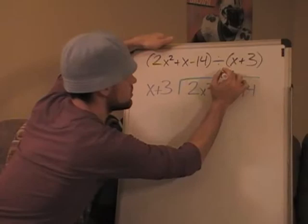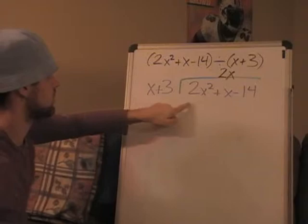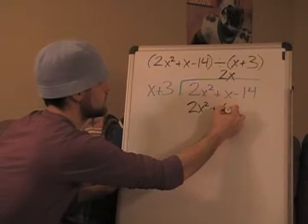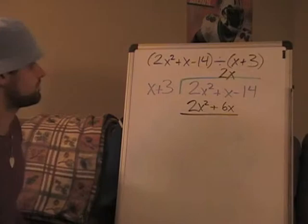And I would need something else to make it look like 2x squared, and that's just a 2. So put a 2 up there, 2 in front of your x, 2x times x, that's 2x squared, fantastic. Okay, now 2x times 3, let's see, 6x, there it is.